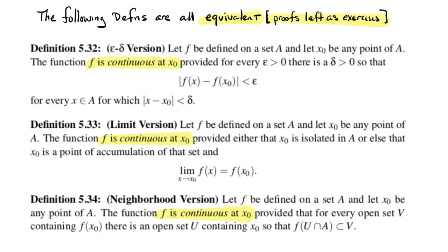Let me start with Definition 5.33, the limit version of continuity. Here f is a function defined on some set A with domain A taking real values, and x₀ is a point of A. If x₀ is an isolated point of A, then by default f is continuous there — every function is continuous at every isolated point. Otherwise, if x₀ is an accumulation point, we say it's continuous if the limit exists and equals the function value.